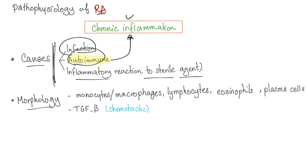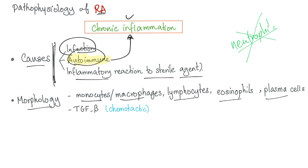The morphology of chronic inflammation: you have monocytes, macrophages, lymphocytes, eosinophils, and plasma cells. Not neutrophils — those are acute inflammation. We're talking about chronic inflammation. We also have TGF-beta, which is chemotactic — 'chemo' because the message is chemical, 'tactic' because it recruits other cells.